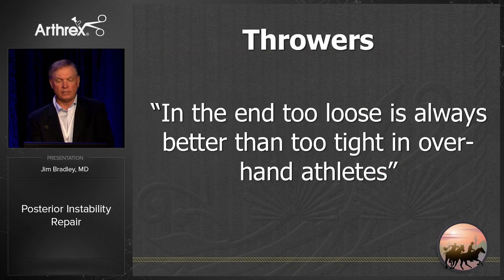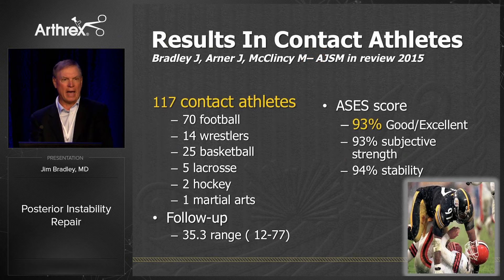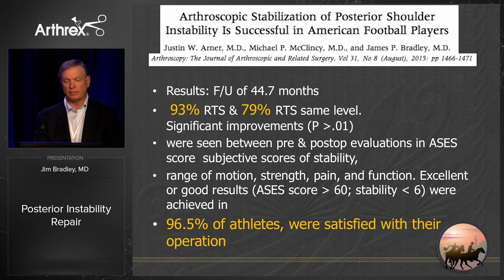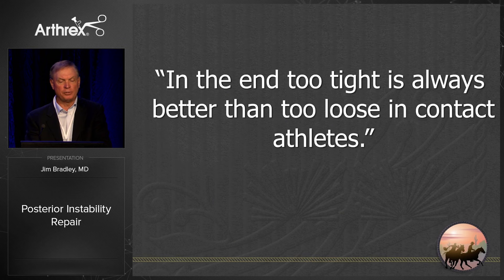In the end, in throwers, too loose is always better than too tight in overhead athletes. Contact athletes have better outcomes and better return to sport. Of our 200 patients, 117 were contact athletes and 93% returned to sport. In American football players, we had 93% return to sport and 79% returned at the same level — many of them college and professional athletes. In contact athletes, tight is always better than too loose, because offensive linemen actually prefer it since they have less external rotation.